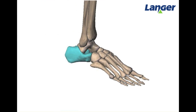The calcaneus is the largest bone in the foot and serves to transmit the weight of the body to the ground. The talus is the second largest bone in the foot and articulates with the tibia and the fibula.